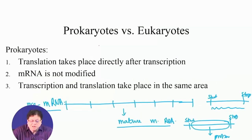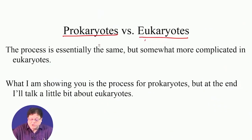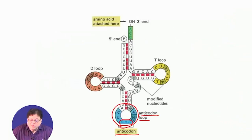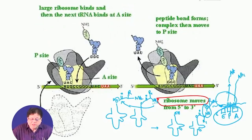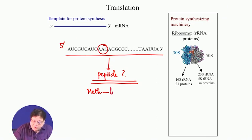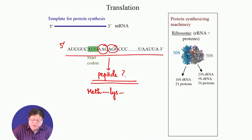What is the second amino acid? That depends on the next codon after AUG. For that you need the genetic code. Looking up the code, AAG codes for lysine. So the second amino acid will be lysine.